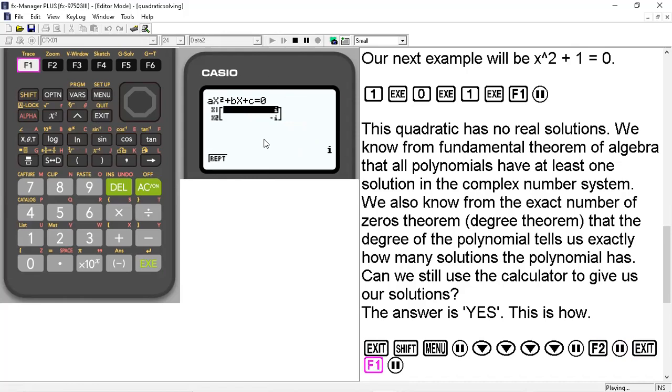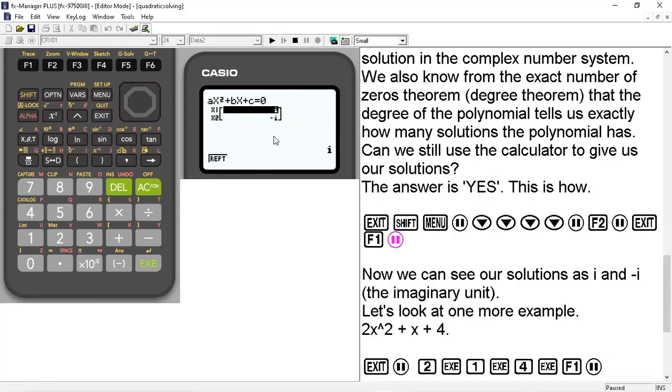We'll go back to the coefficient screen and hit F1 to solve. And now you can see that we have i and -i as my solutions. And these are the imaginary units, the square root of -1. So the Casio calculator can do complex solutions. You just have to put it in the right setup to do that.